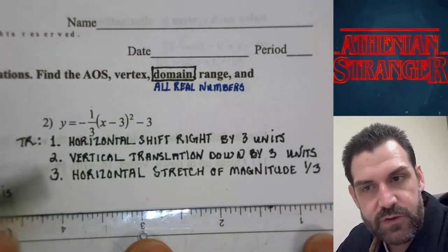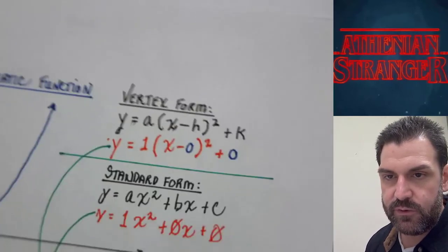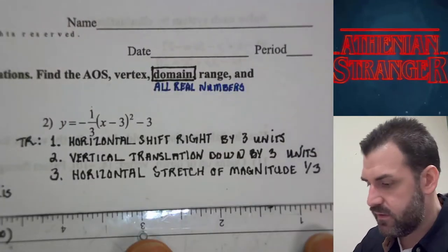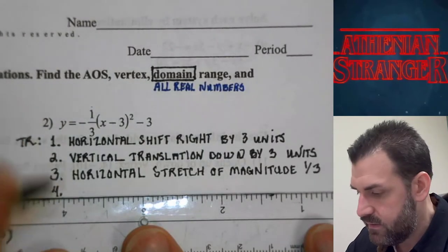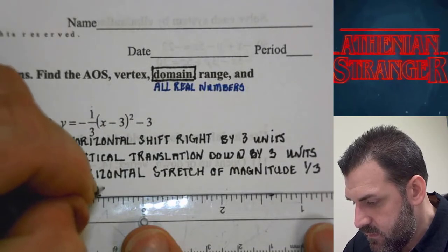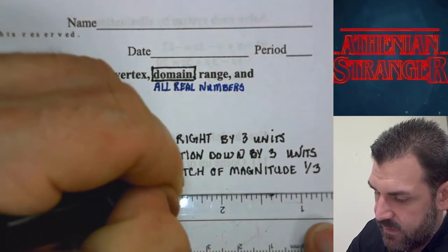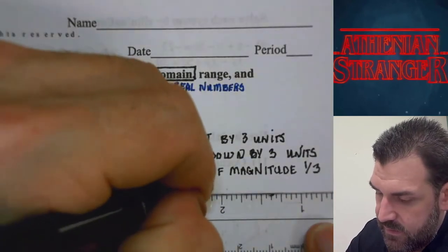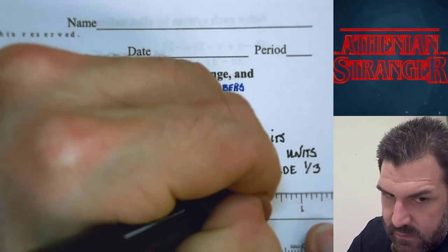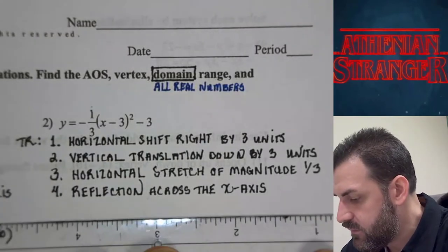Did it flip? Is there a negative sign? The original equation has a positive one, so if a is negative it's facing down. Yes, there's a negative sign, so there's a reflection across the x-axis. That's all four transformations for number two.